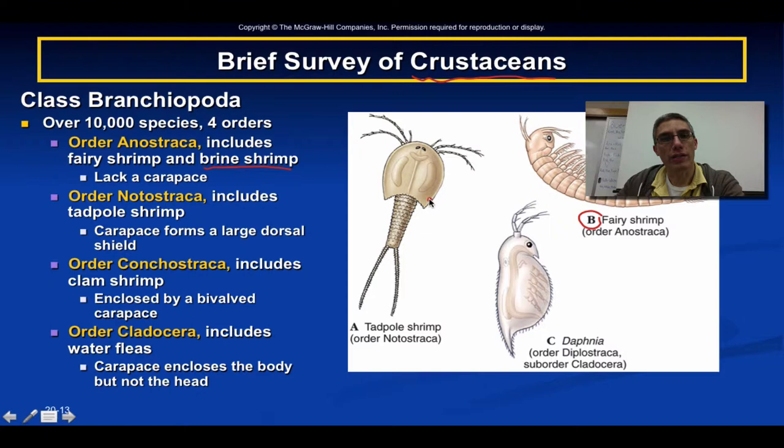Order number three is Concostraca, which includes the clam shrimp. Their carapace is unique because it is actually bivalved — in other words, these animals have a hinged, two-shelled carapace.